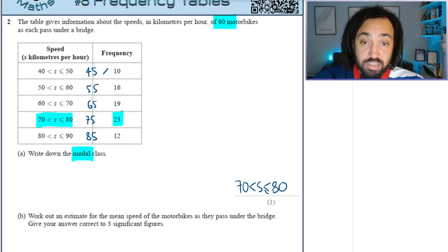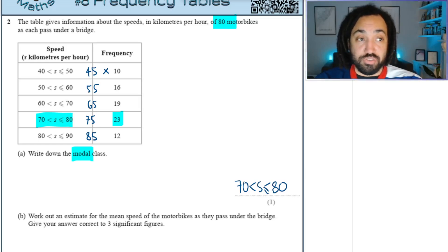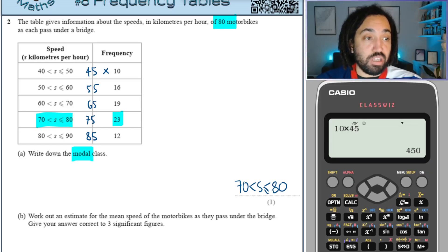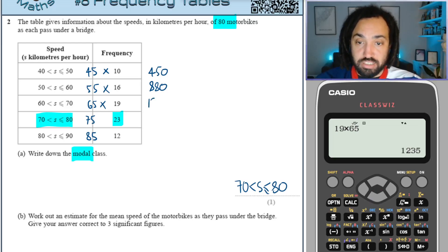Because there were 10 motorbikes in this row and they were traveling average 45, then the total speed of those 10 would be 10 times 45, which is 450. Then we times the next two together and that gives us 880. Times the next frequency by midpoint gives me 1235, and then the next one gives me 1725, and finally the last one gives me 1020.